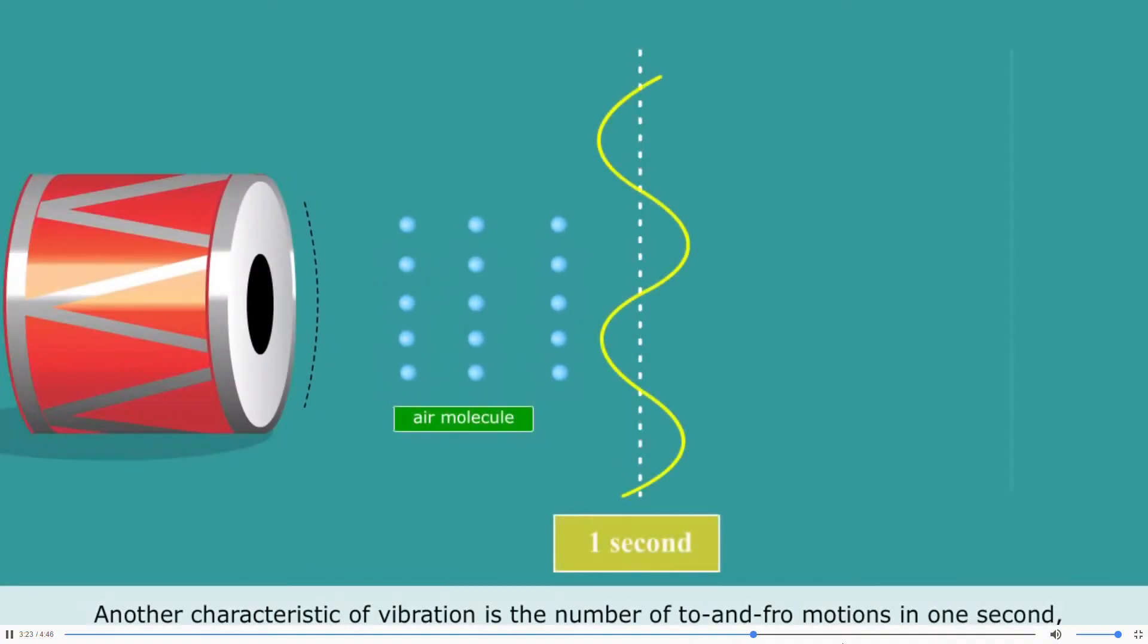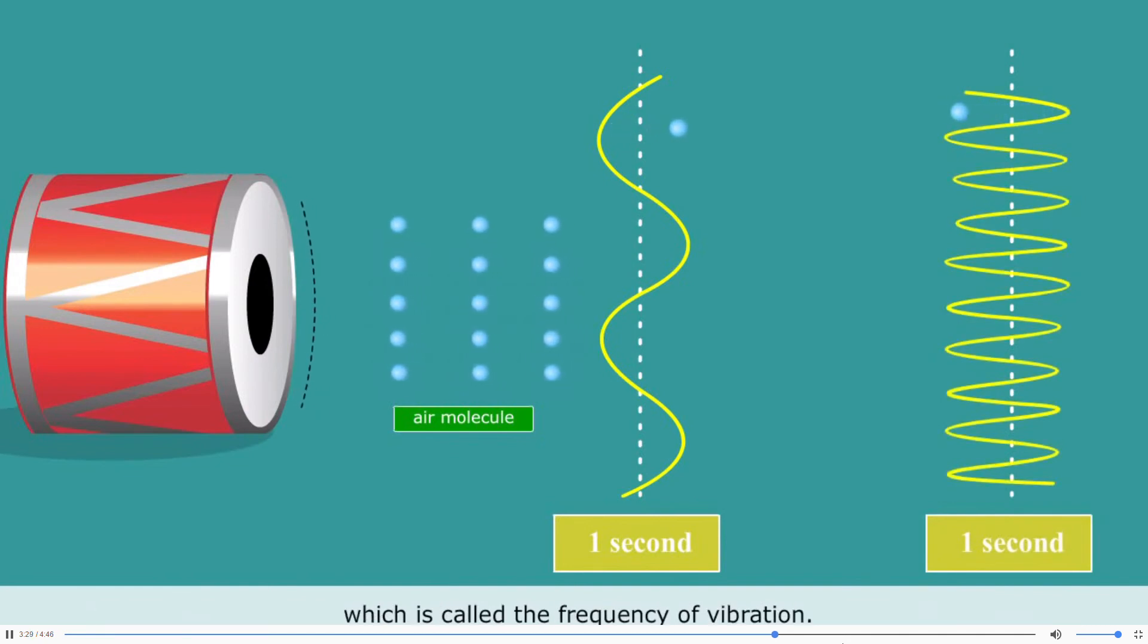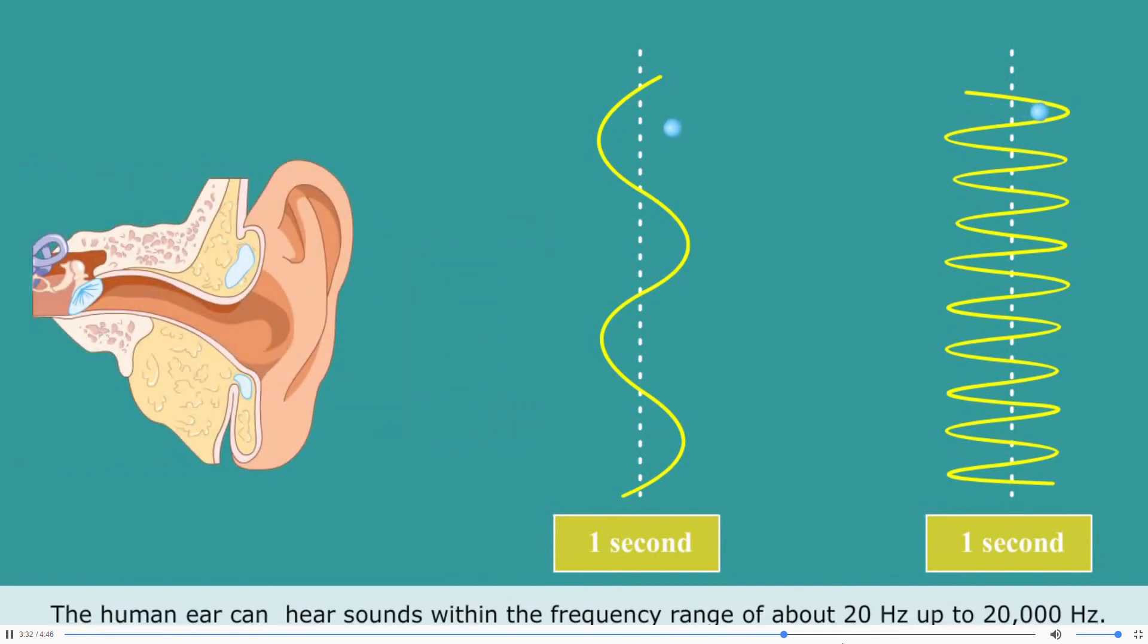Another characteristic of vibration is the number of to and fro motions in one second, which is called the frequency of vibration. The human ear can hear sounds within the frequency range of about 20 Hz up to 20,000 Hz.